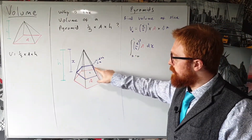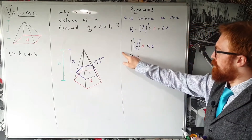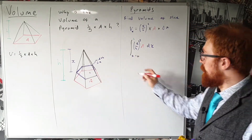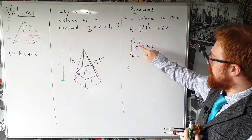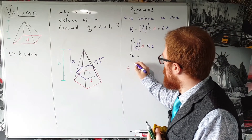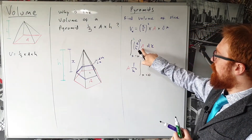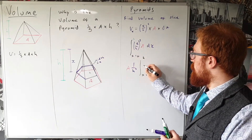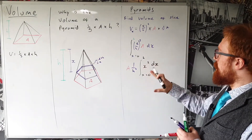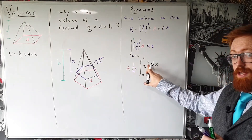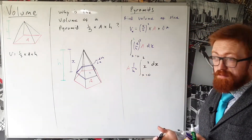Now let's tidy up and evaluate the integral. Since the height H and the base area A don't change as we move our slice up and down, we can factorise them out as constants: A times (1/H²) times the integral from x equals zero to H of x² dx. To integrate x², we add 1 to the power and divide by the new power: x² becomes (1/3)x³. So we get A times (1/H²) times (1/3)x³, evaluated between 0 and H.